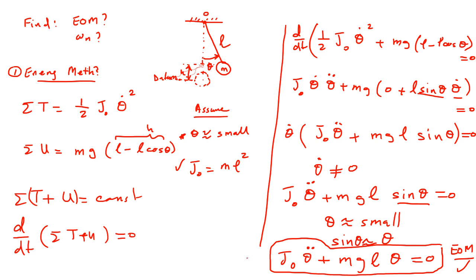From the equation of motion, what is the natural frequency? It is the square root of this coefficient: MGL over J_O. That's the natural frequency. Now let's solve the same problem but using Newton's second law.